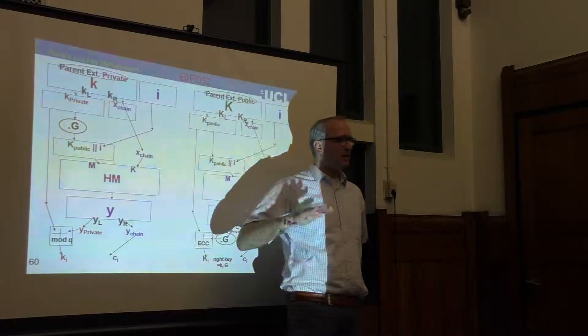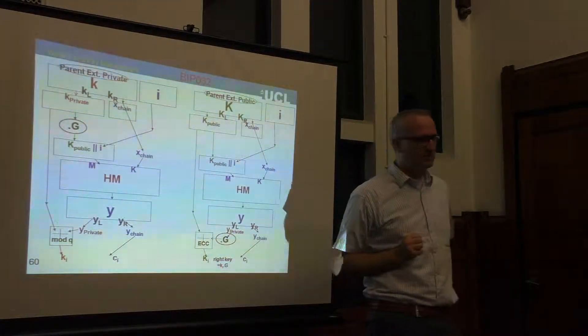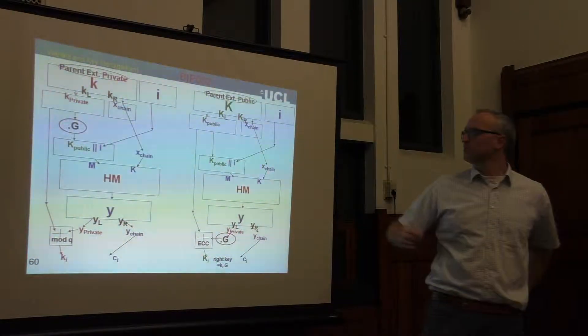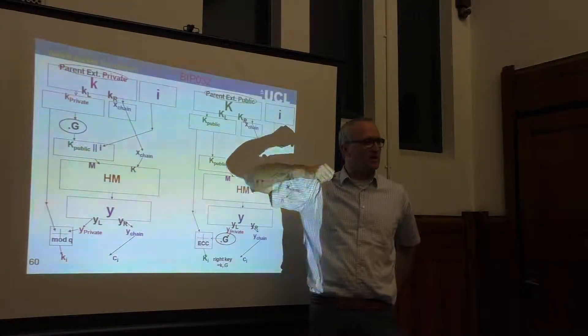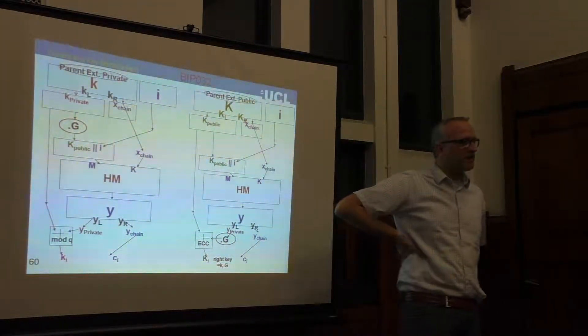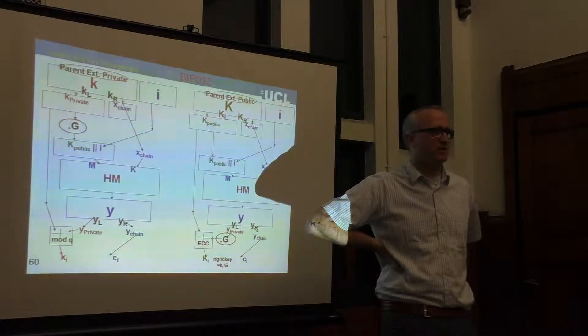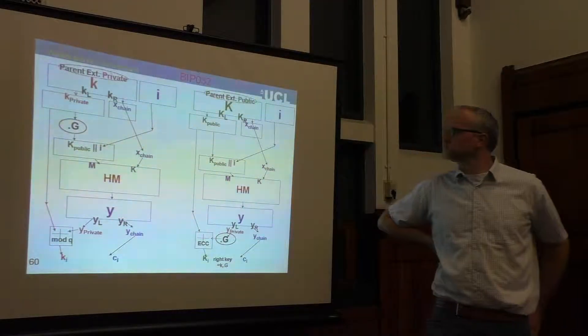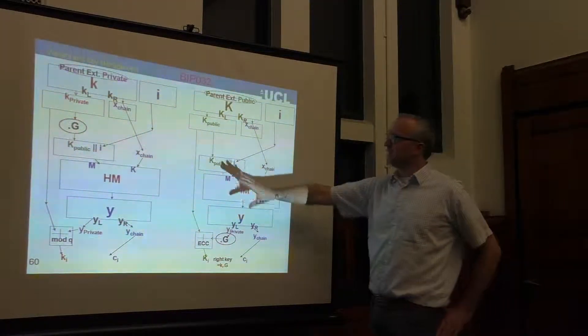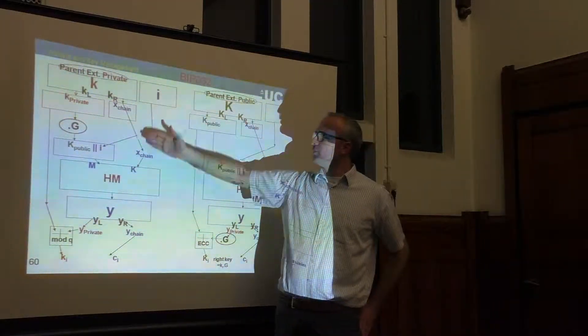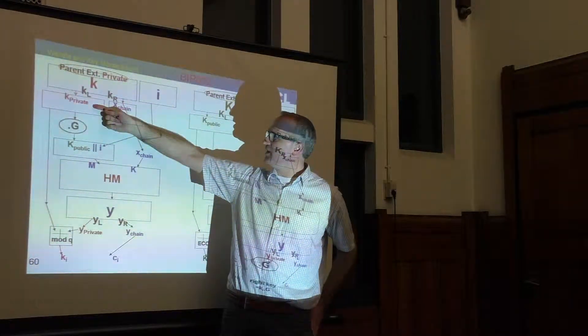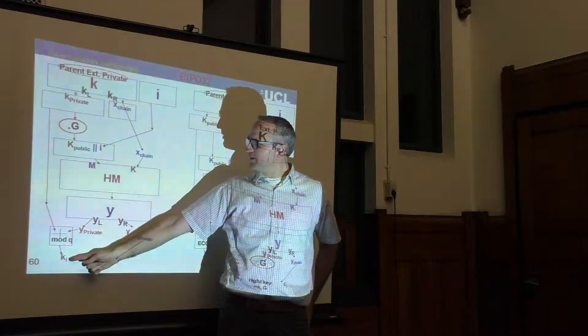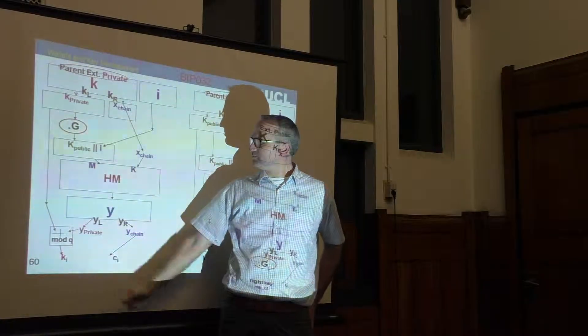It can be used as a private key, but it can also be used to be fed here for another layer of key derivation. So either you stop here and you use it as a private key for some transaction, where we call this index i, or you can carry on for a number of levels. It's a very flexible mechanism. This is the left-hand side, which is the private part. If you know the private part here, you obtain the private part here.